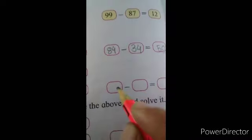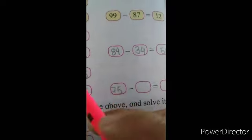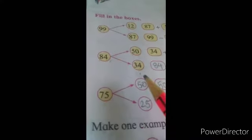Now again: 75 is the bigger number. We already took 50, so now we take 25. So 75 minus 25, and the answer will come to 50 — the remaining number.